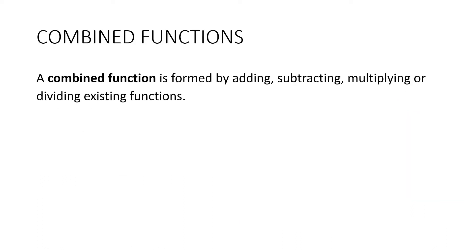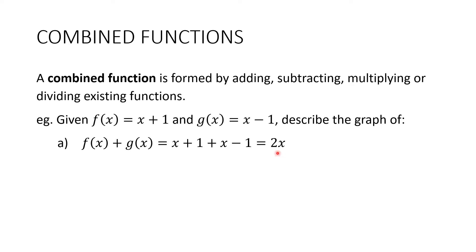So let's start with combined functions. They are formed by adding, subtracting, multiplying or dividing existing functions. So suppose we have f(x) = x + 1 and g(x) = x - 1. Describe the graph of f(x) + g(x). All we're going to do here is substitute in, so we get x + 1 + x - 1, which is 2x. And this of course is a straight line, it's a linear function, y = 2x.